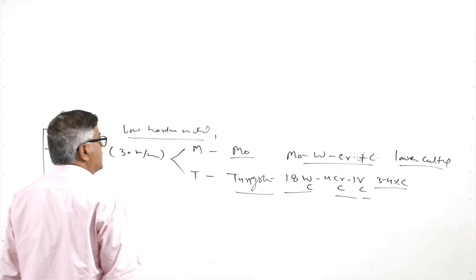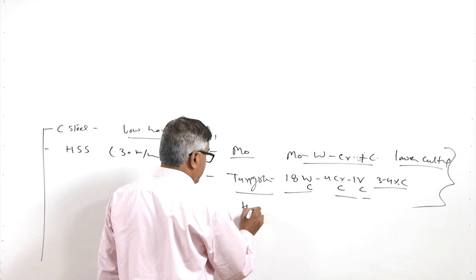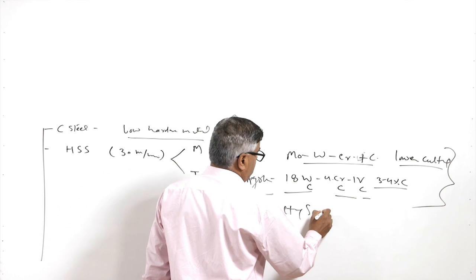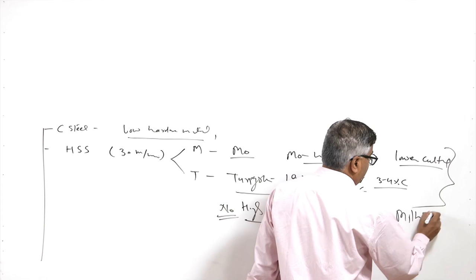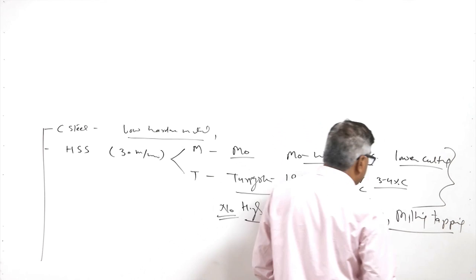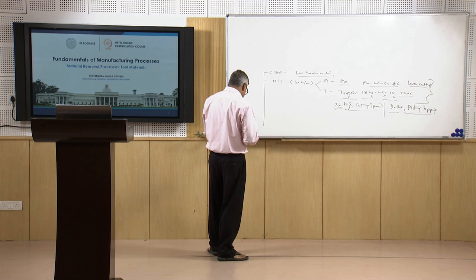High speed steels soften at elevated temperature, so they are not used for very high cutting speeds. They are normally used for low cutting speed operations like drilling, milling, and tapping — common tools where either cutting is interrupted or cutting speed is low — so not much heat is generated to cause a rise in temperature that would adversely affect tool life.